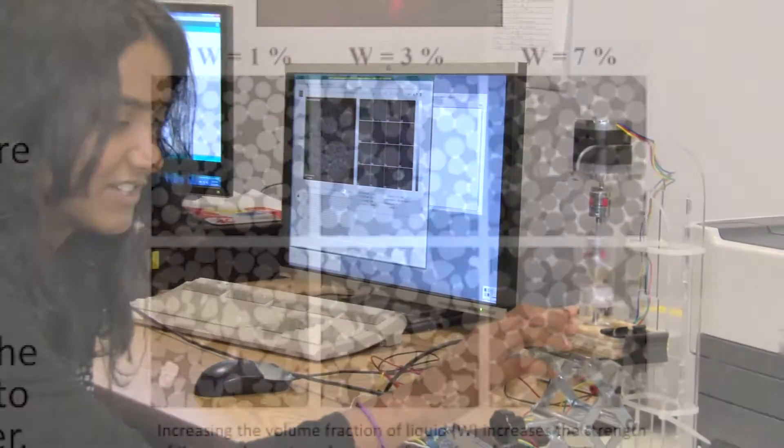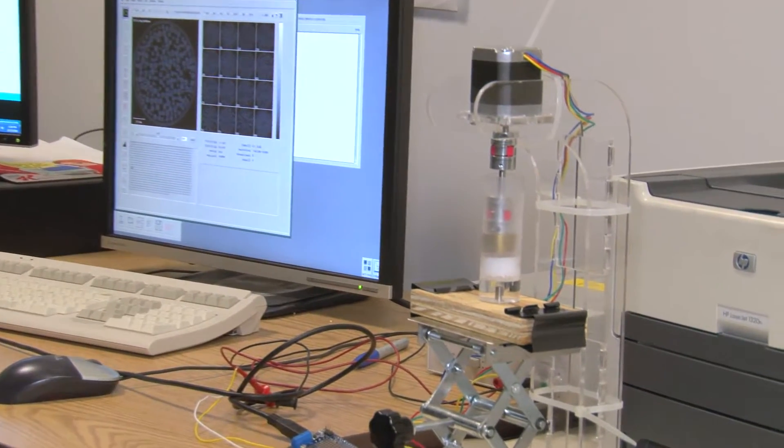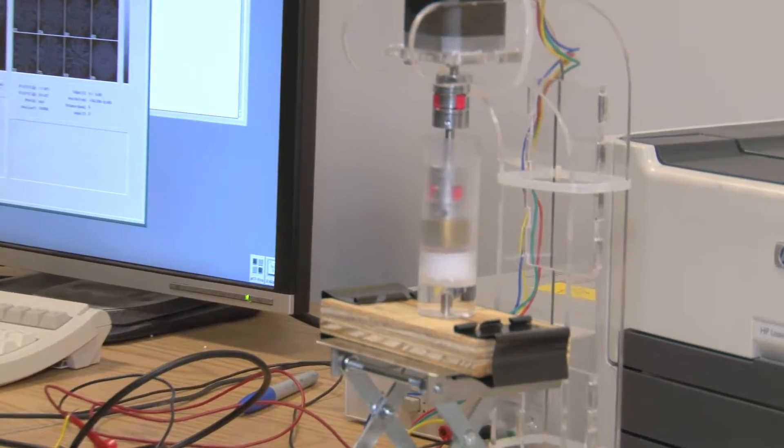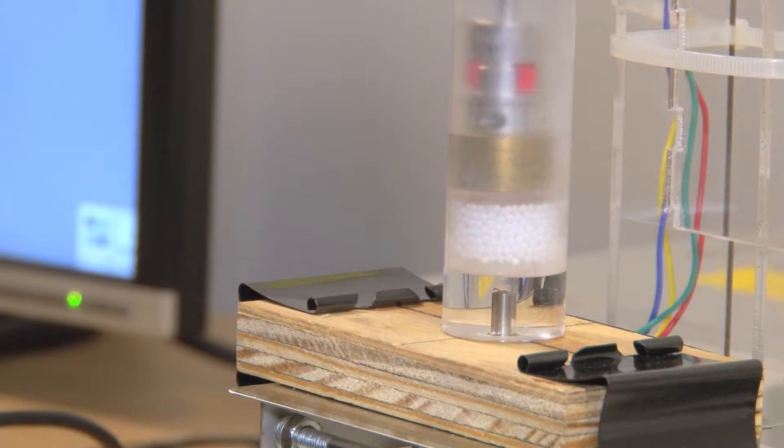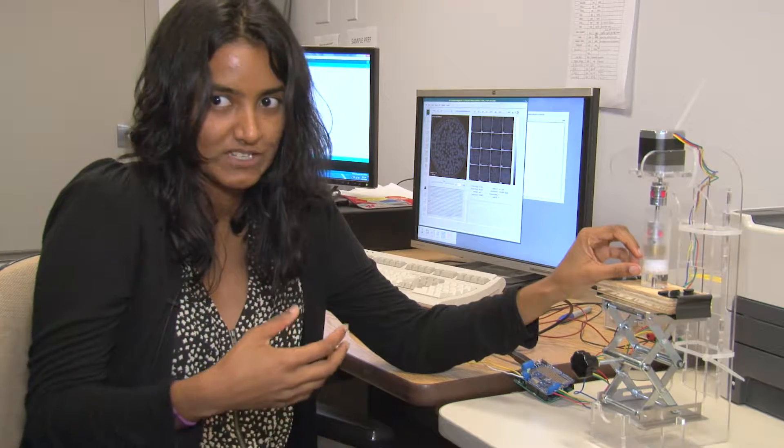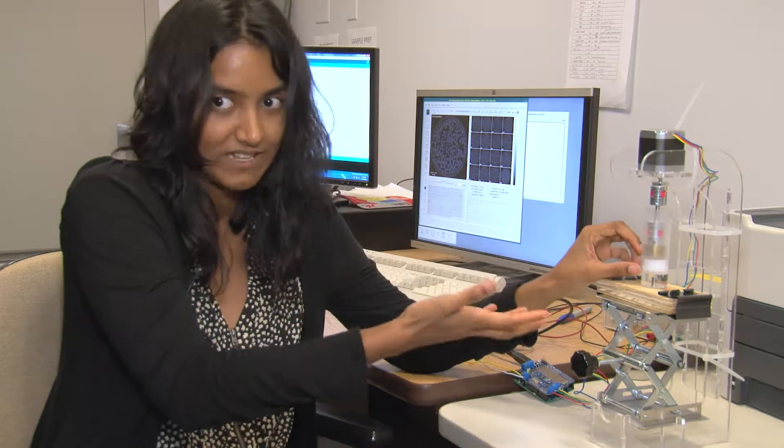These beads inside are just granular materials—spherical plastic beads. What we've done is put a layer of liquid in the center. We're trying to measure how much that liquid is going to spread in the system.